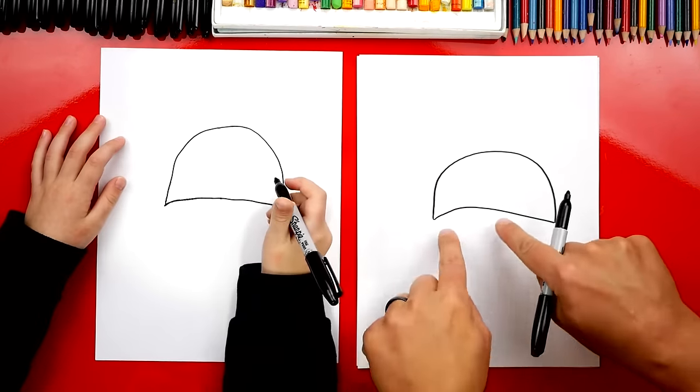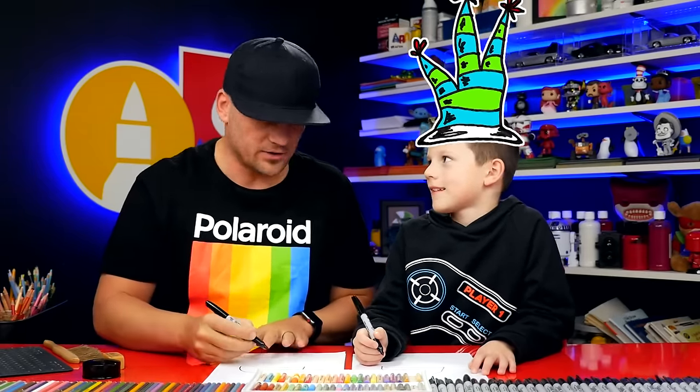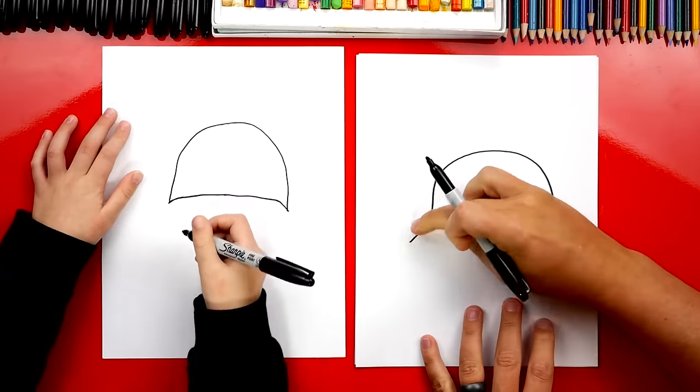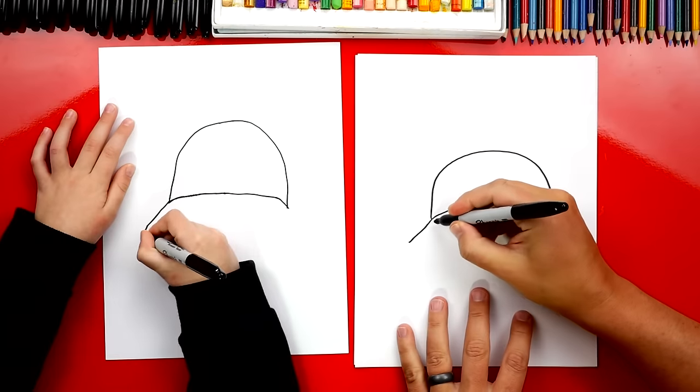Now we're gonna draw the bill sticking out of the front. That's this part that blocks the sun when it's too bright outside. So we're gonna start right here and we're gonna draw a diagonal line that comes out, right here on the left side that comes out. Good job.